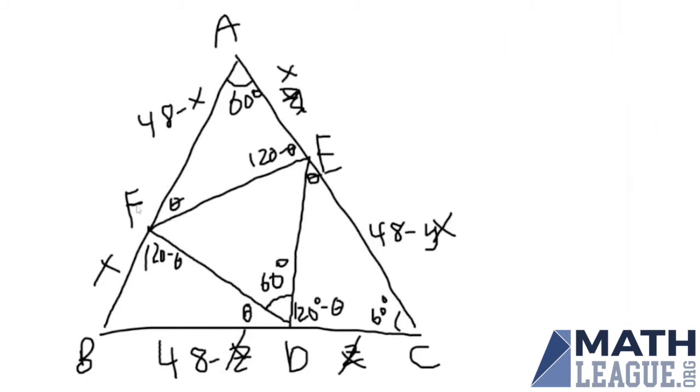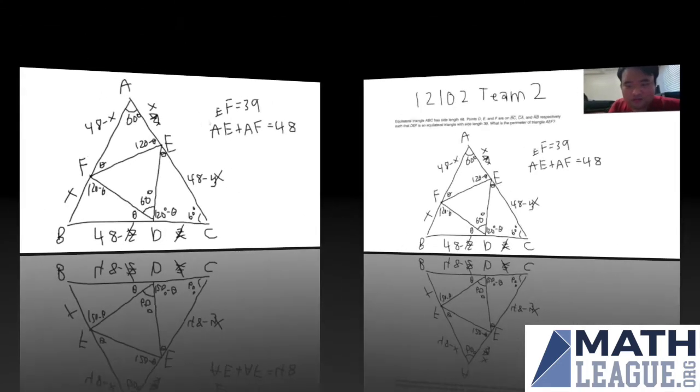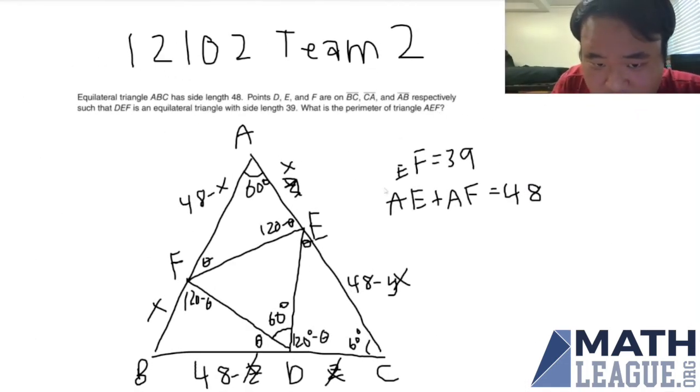Finally, we see that since DEF has side length 39, that means that EF has length 39. And then AE plus AF equals X plus 48 minus X. So the Xs cancel out and we get 48. The perimeter of AEF is equal to AE plus AF plus EF. So our answer is 39 plus 48, which is equal to 87.